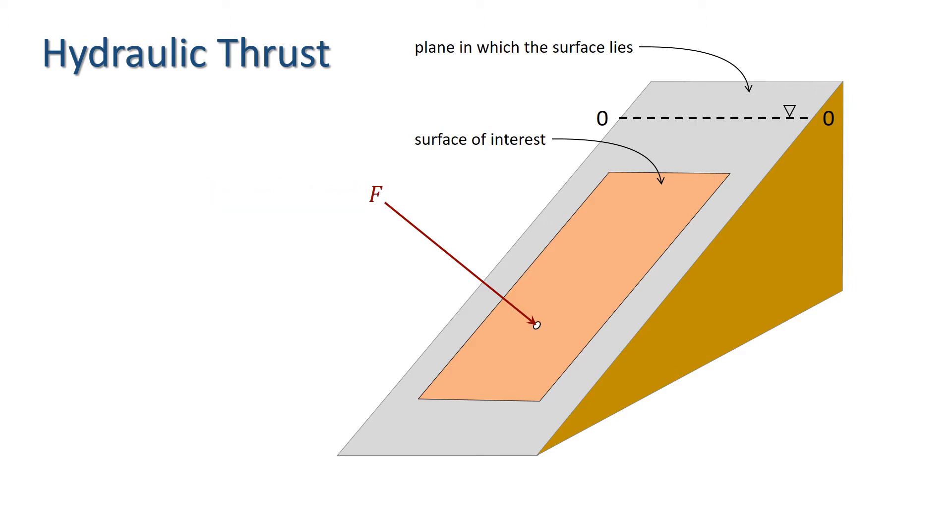The point of application of the hydraulic thrust is called the centre of pressure, and we usually denote it C. The centre of pressure is defined as the point of application of the hydraulic thrust, F, which produces the same rotational momentum effect around the axis OO as the distributed hydrostatic pressure over the surface of interest.